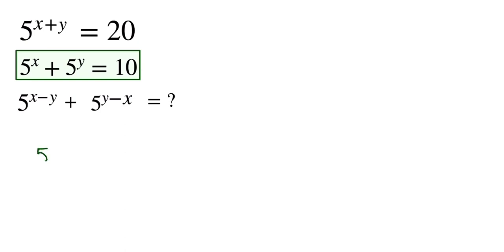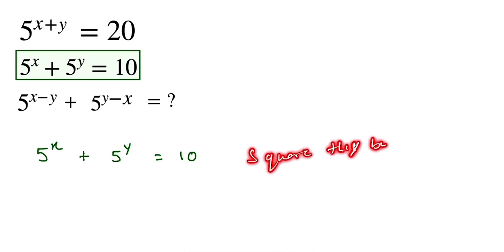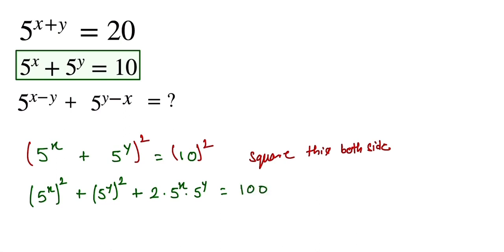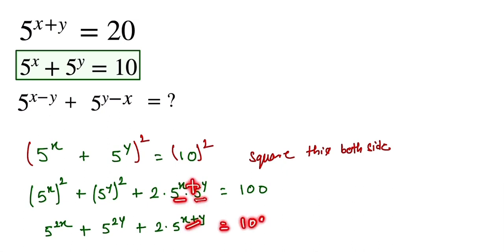First, we focus on the equation 5 to the power x plus 5 to the power y equals 10, and we square both sides. Expanding using (a+b)² gives 5 to the power 2x plus 5 to the power 2y plus 2 times 5 to the power x times 5 to the power y equals 100. Since the bases are the same, we add the powers: 2 times 5 to the power x+y equals 100.